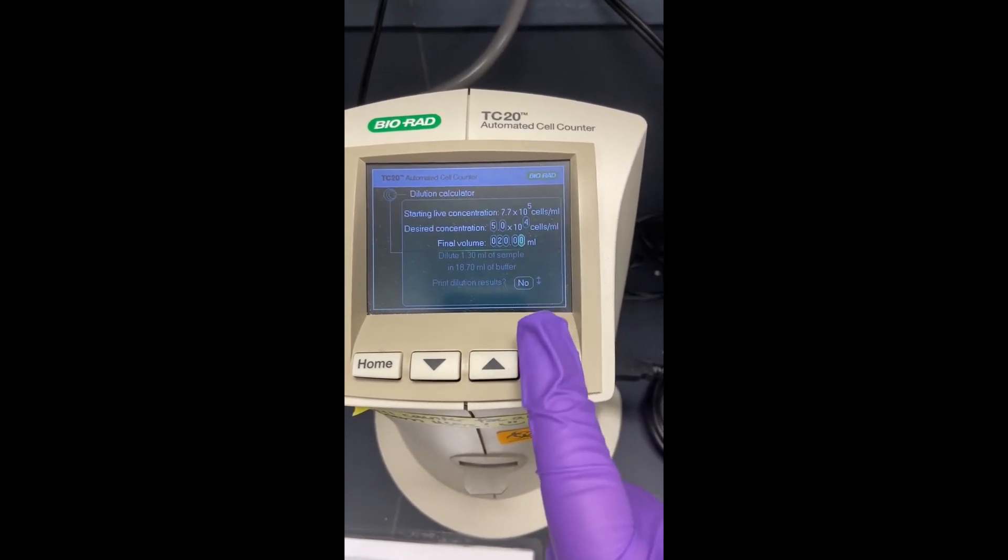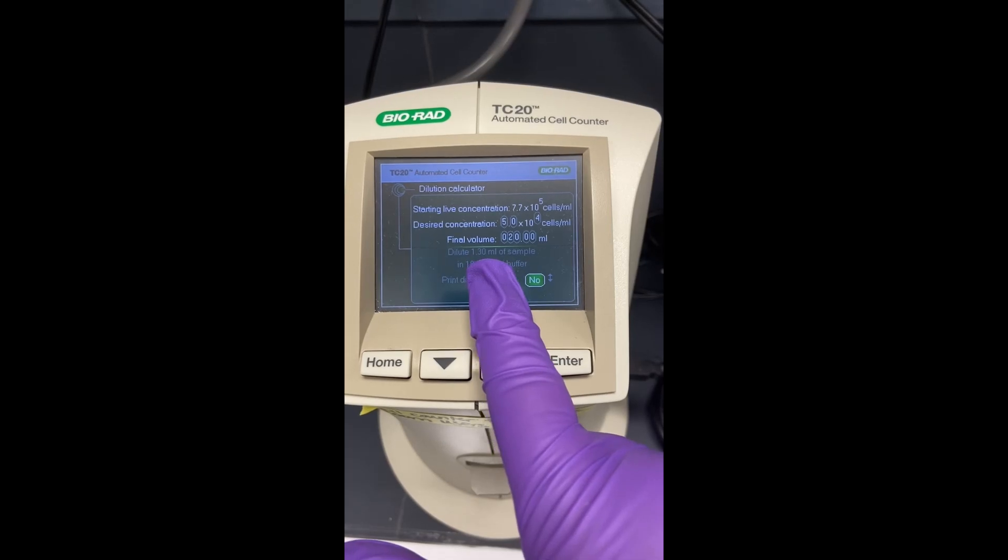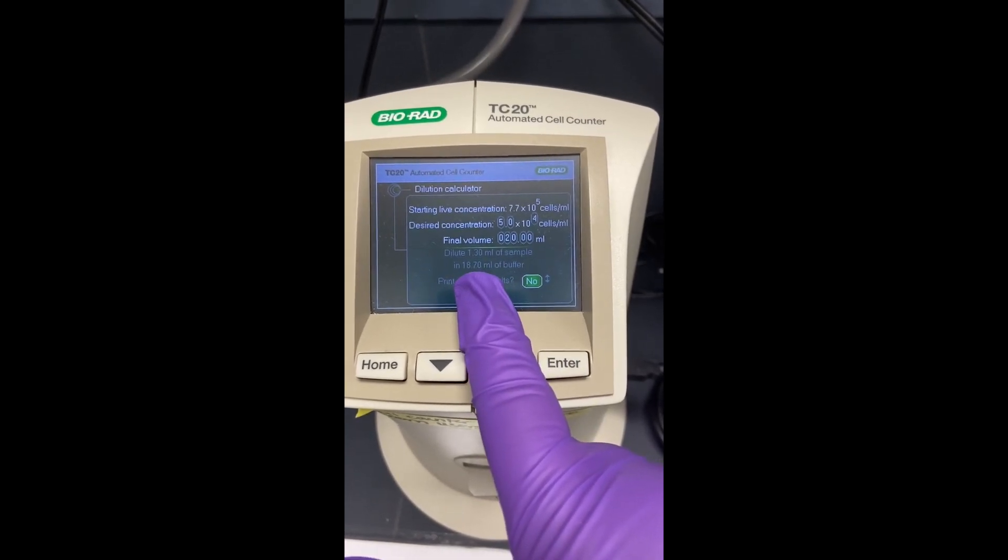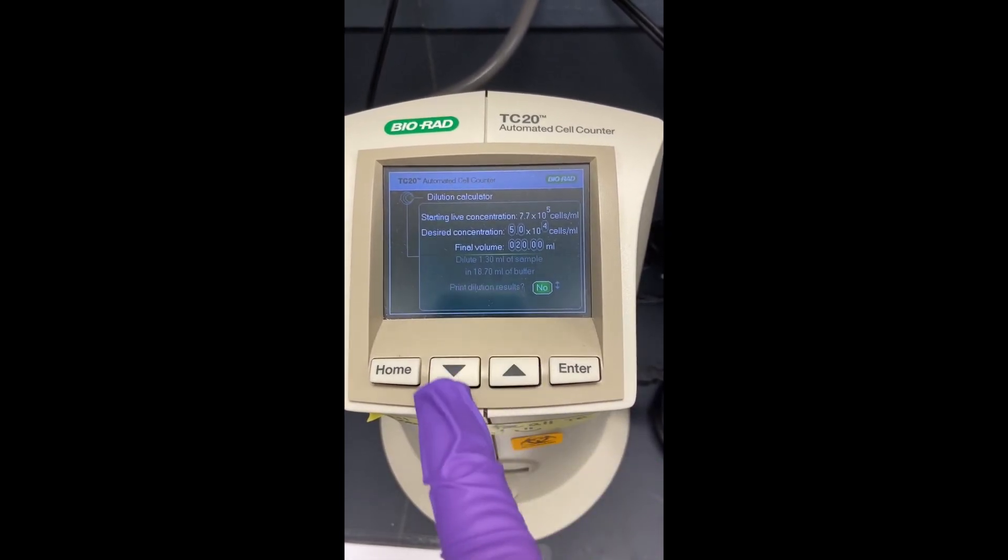And the really nice thing is that it tells you, okay, I need 1.3 mils of my cell sample and then I need to dilute it in 18.7 mils of buffer. And what this usually means is your cell culture media.